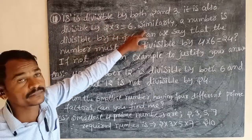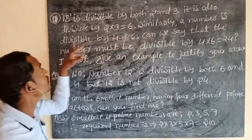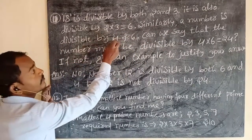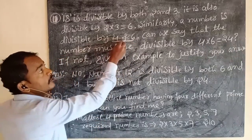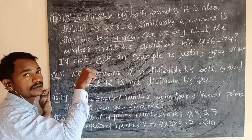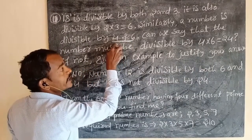So, similarly, a number is divisible by 4 and 6. A number is divisible by 4 and 6.